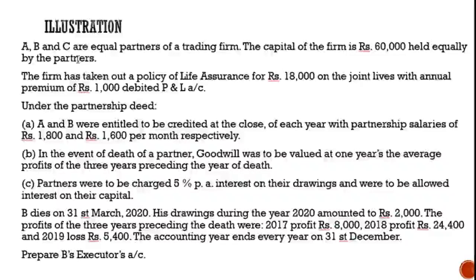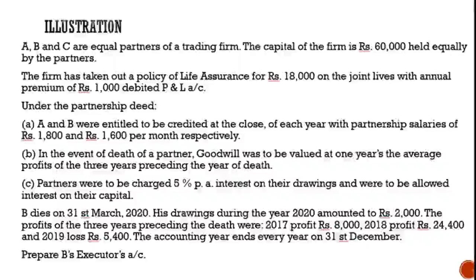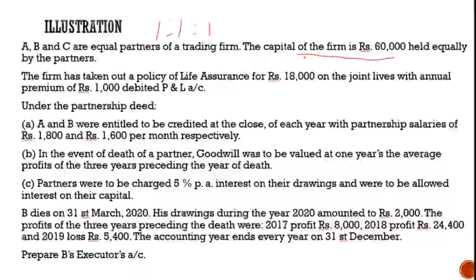Now we will understand the problem. There are 3 partners: A, B and C. They are equal partners, so the old profit sharing ratio is 1:1:1. The capital of the firm is Rs. 60,000 held equally, so each partner's capital is Rs. 20,000. The firm has taken a joint life policy for Rs. 18,000, and the annual premium of Rs. 1,000 is charged to the profit and loss account.